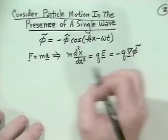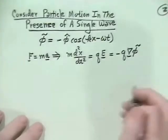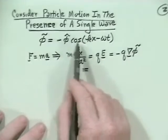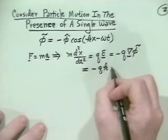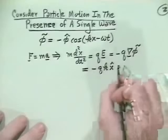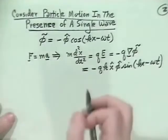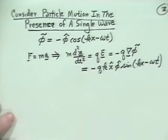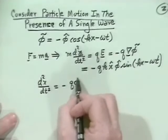Tilde just reminds me this is a wave — maybe small, maybe large amplitude. Taking the gradient of the cosine flips the sign, so we get: d²x/dt² = −(qφ̂/m)·k·sin(kx − ωt). This is a one-dimensional equation. To remove the time dependence, we transform to a frame moving with the phase velocity of the wave. We define x̂ = x − (ω/k)t, the particle position relative to the wave. Then the equation becomes d²x̂/dt² = −(qφ̂/m)·k·sin(kx̂).